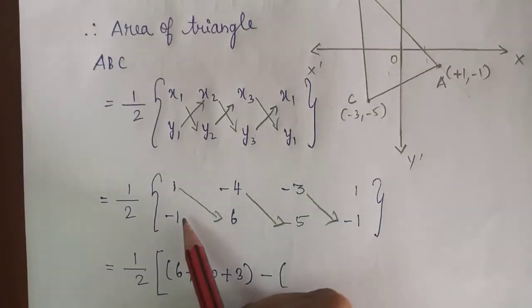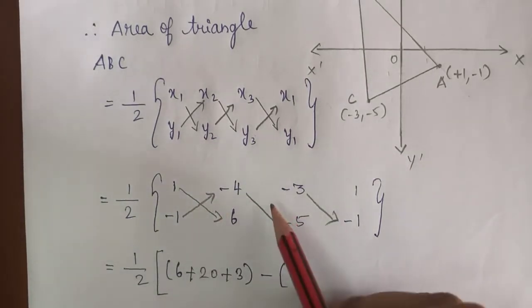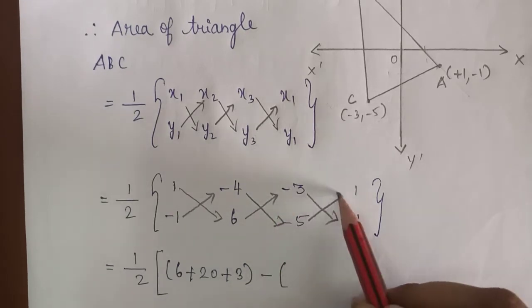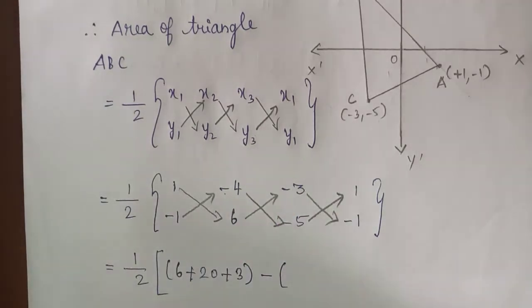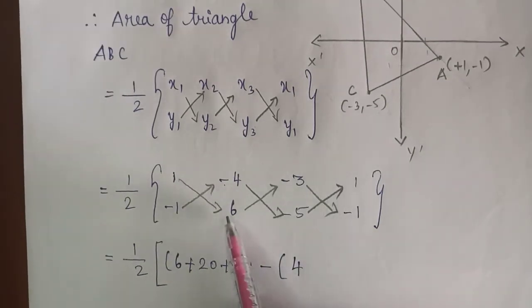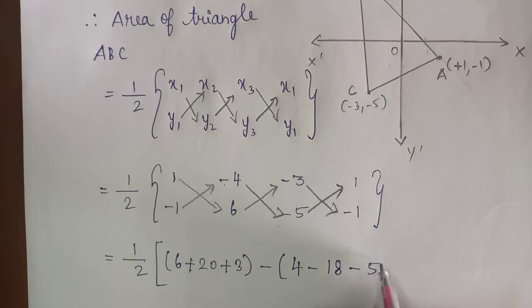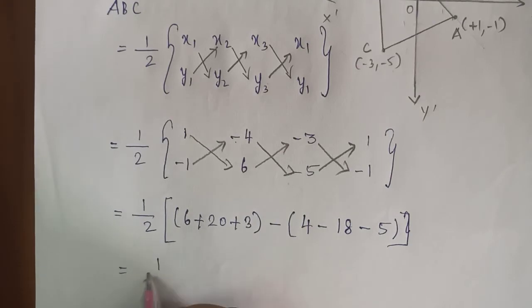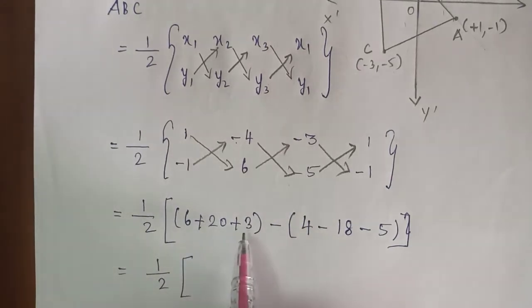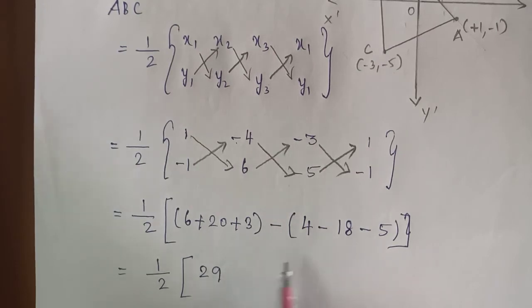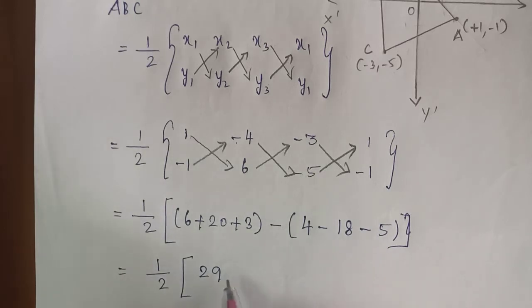Then moving in the upward direction: minus 1 into minus 4 = plus 4; 6 into minus 3 = minus 18; minus 5 into 1 = minus 5. Which is equal to (1/2) into (6 + 20 + 3) minus (4 - 18 - 5).